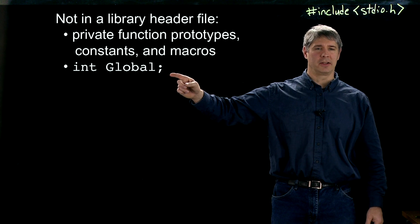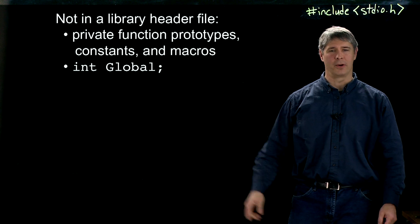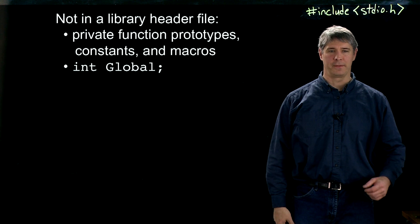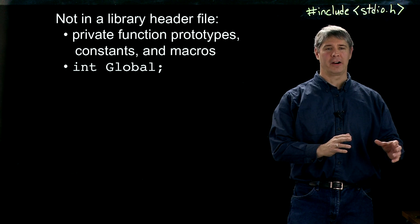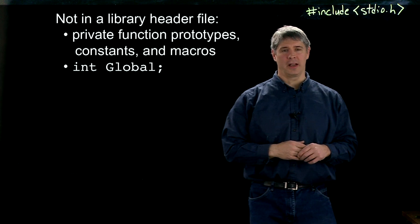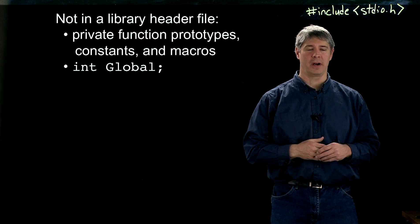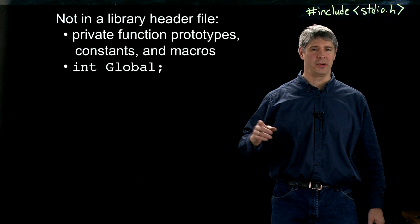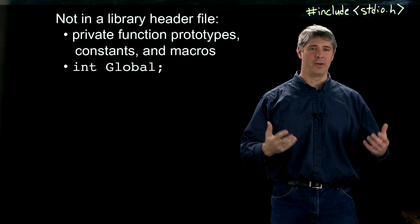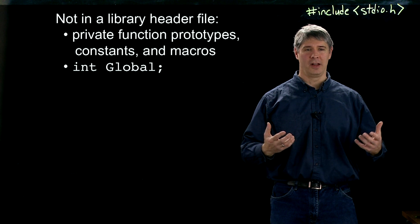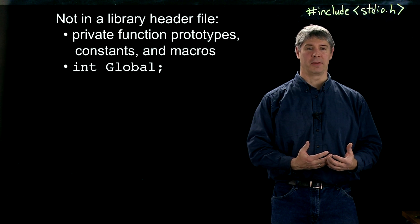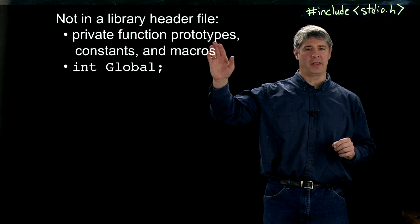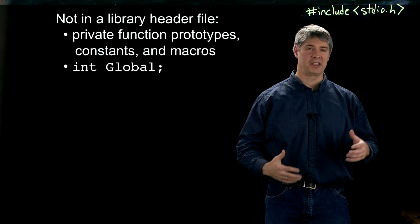Another thing you don't want to define in a library header file is a line of the form `int global`. When the compiler sees `int global`, it defines and allocates space for a variable called global. If two different C files both include that header file and compile to object files, they've each defined their own global variable called global. When you link them together, there will be an error because two global variables with the same name have been defined. Put global variable definitions in the C file itself, not in the header.